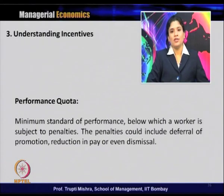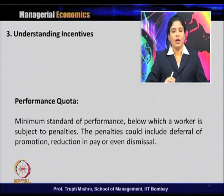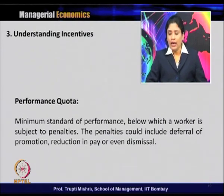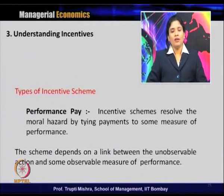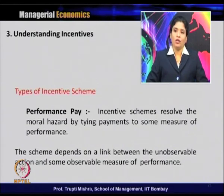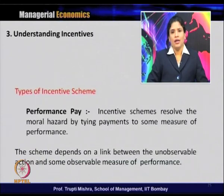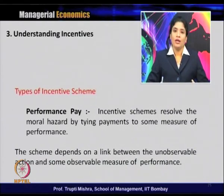The second type is performance quota, where there is a minimum standard of performance below which a worker is subject to penalty. The penalty could include deferral of promotion, reduction in pay, or even dismissal. For a salesman example: if you pay a fixed 50 rupees per day, the salesman knows he gets 50 rupees regardless of whether he sells 1 unit or 100 units — there is no incentive for him to put in more effort.